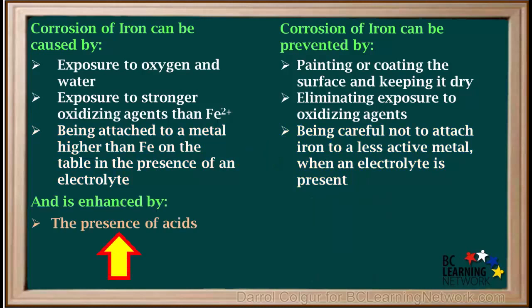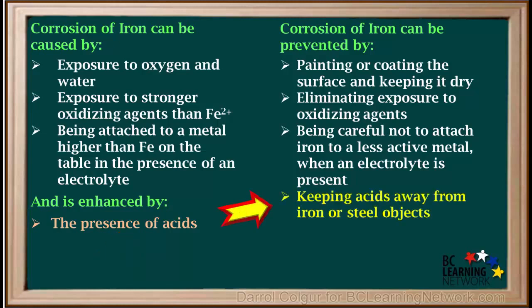Corrosion of iron, or rusting, is enhanced by the presence of acids. So we can limit rusting by keeping acids away from iron or steel objects. This would include protection of the objects from acid rain.